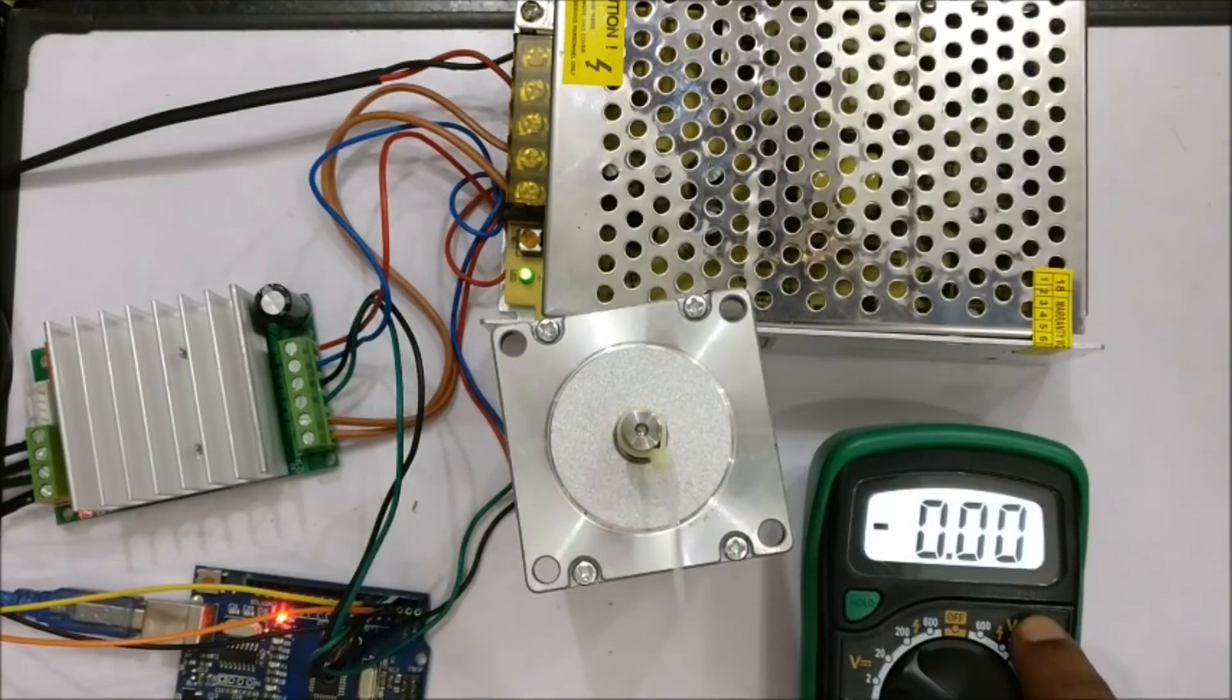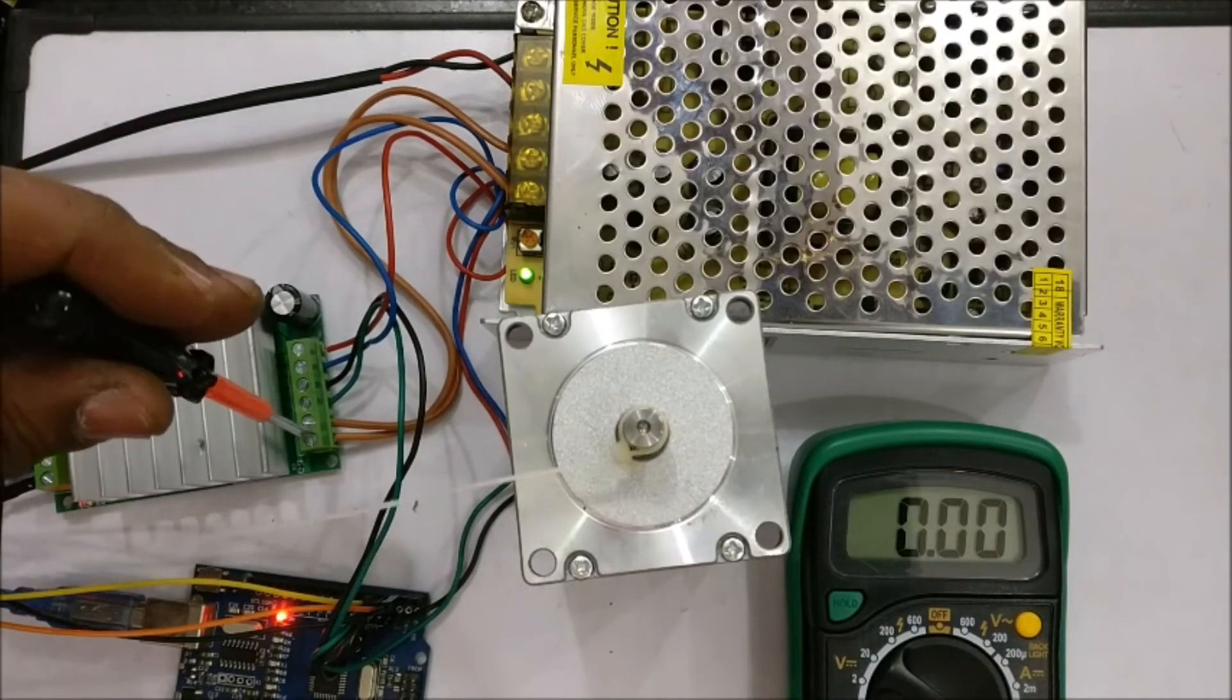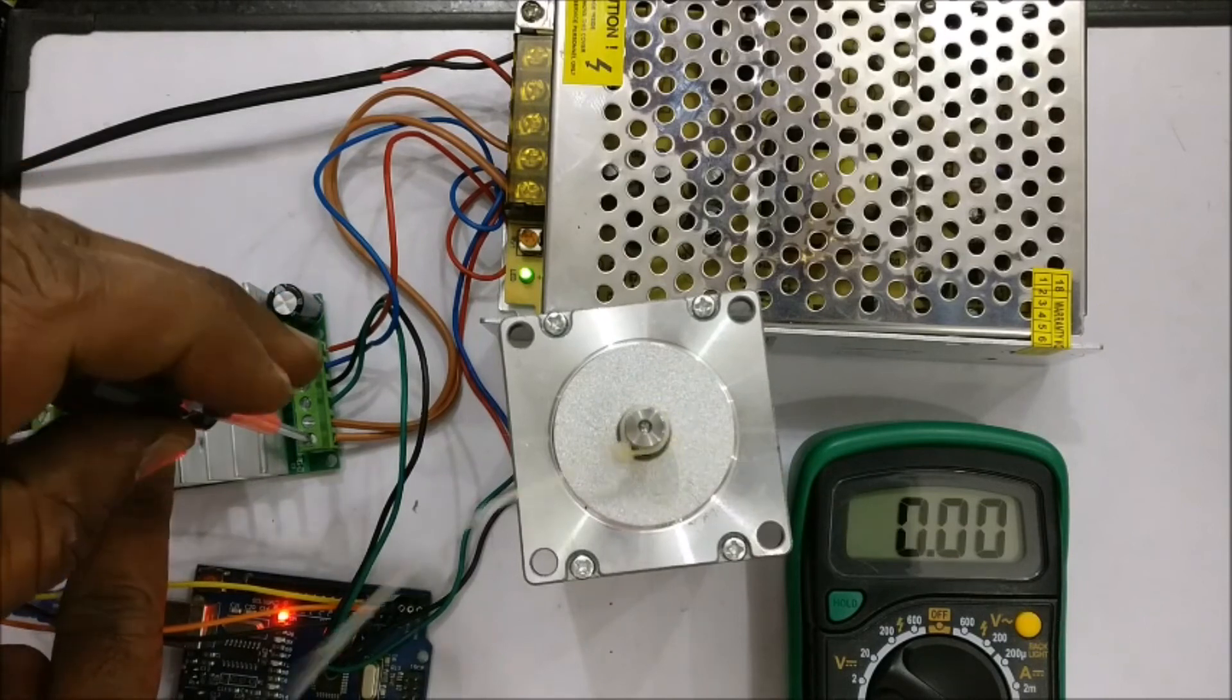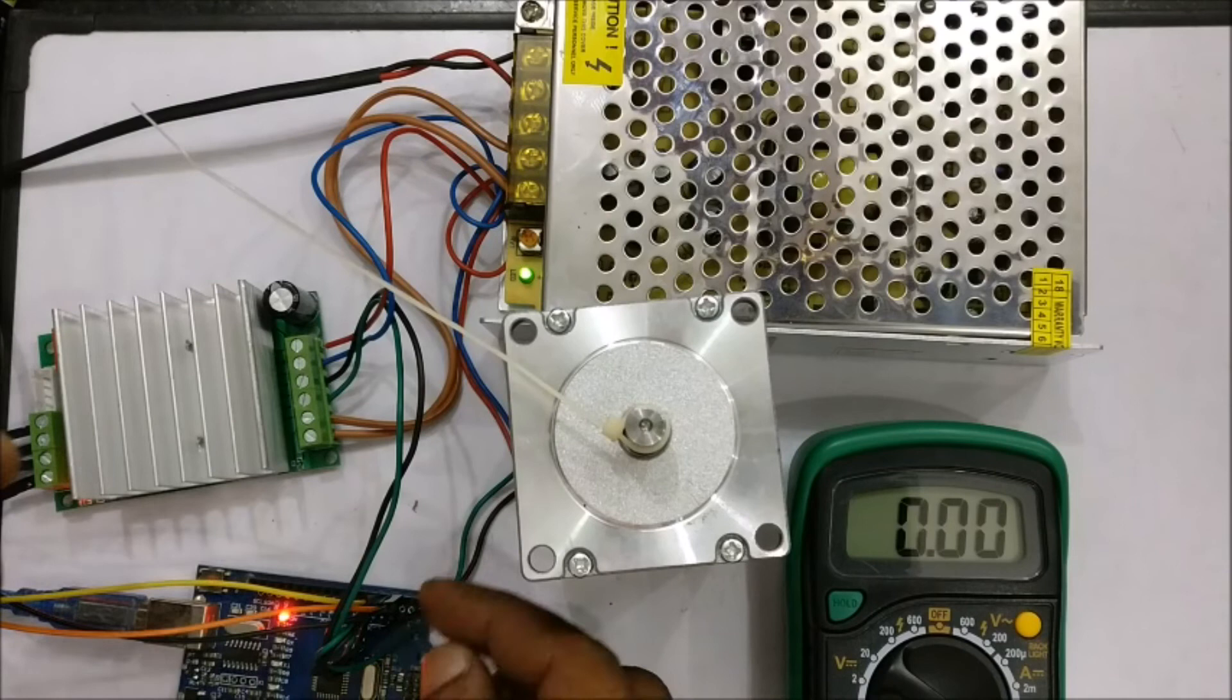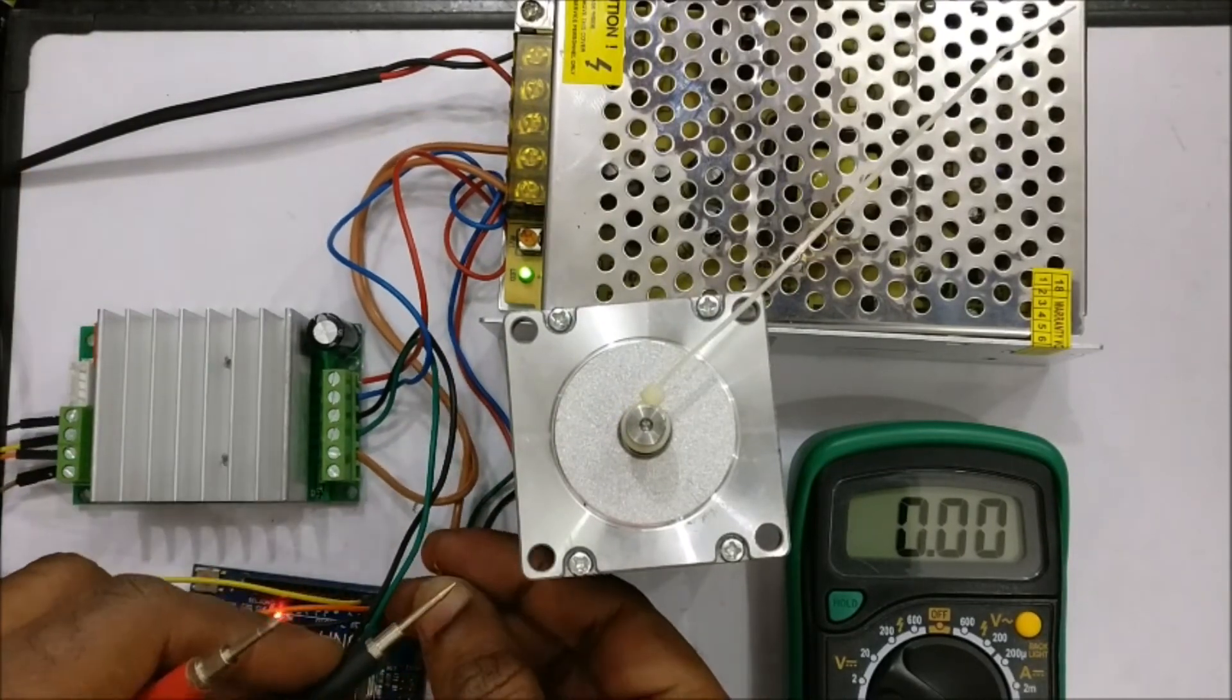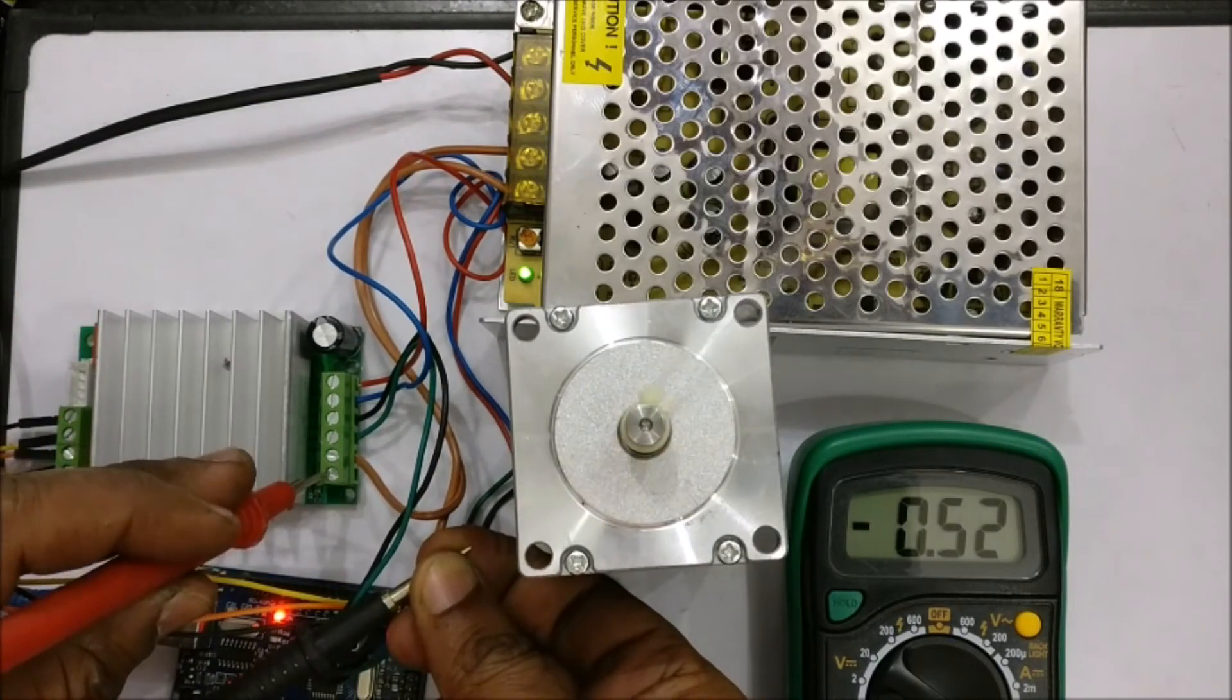Now let us check the current consumption with NEMA 34 motor. To measure current, you remove the positive TB6600 and connect the meter in ampere position in series. Always use meter in series position while measuring ampere.